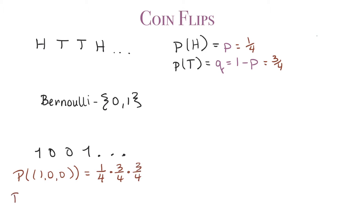What if we change the order? The sequence 0, 1, 0 — tails, then head, then tail — has probability 3/4 times 1/4 times 3/4. We notice that even though the head occurred at different positions in the sequence, the probabilities are the same. The product of these probabilities is still the same. This is what happens when a sequence of Bernoulli random variables is independent.